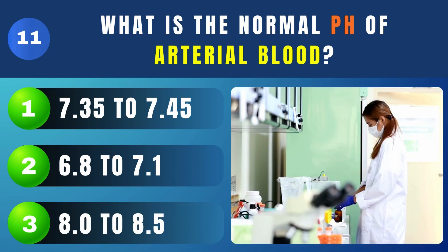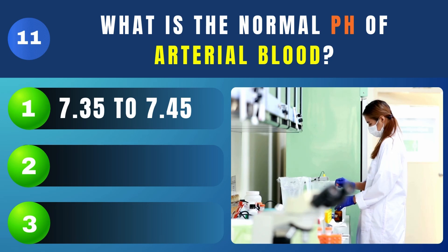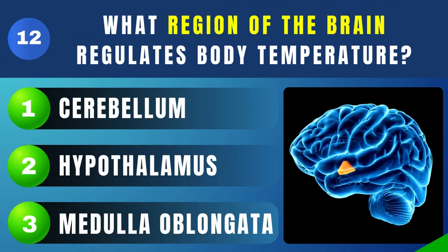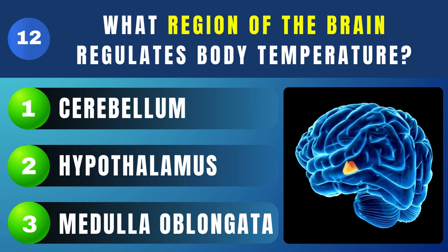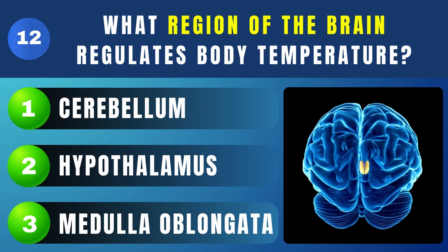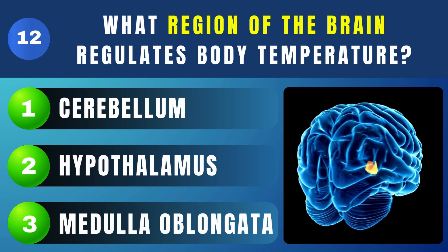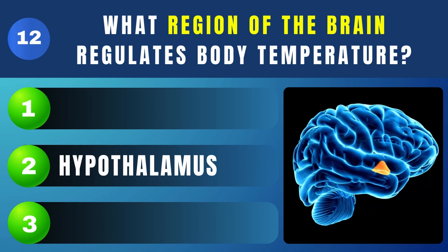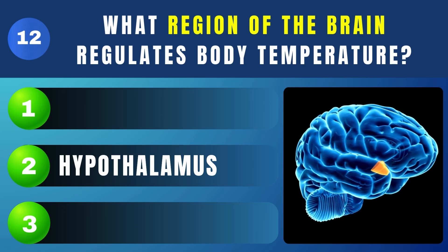What is the normal pH of arterial blood? 7.35 to 7.45. What region of the brain regulates body temperature? Hypothalamus.